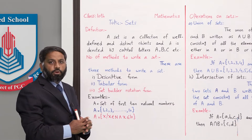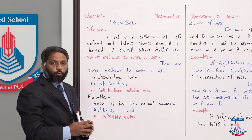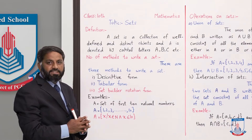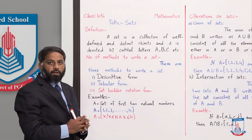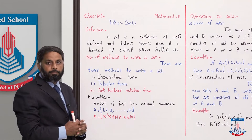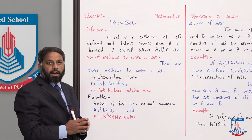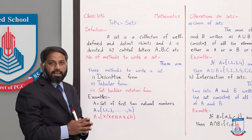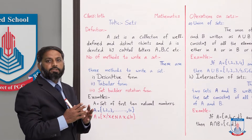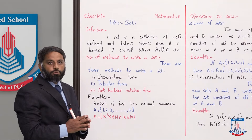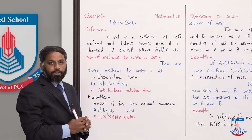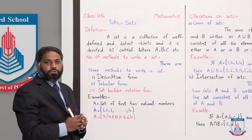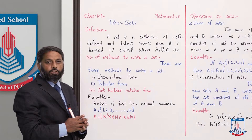First five natural numbers — تو ہمیں یہ معلوم ہے کہ first five natural numbers one سے start ہوتے ہیں: one, two, three, four, five۔ اسی طرح اگر ہم کہتے ہیں set of even numbers تو ہمیں یہ معلوم ہے کہ even numbers وہ numbers ہوتے ہیں جو two پہ exactly divide ہو جاتے ہیں۔